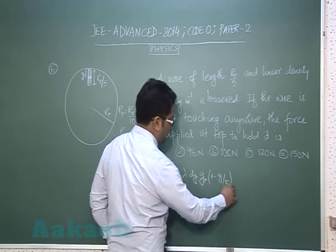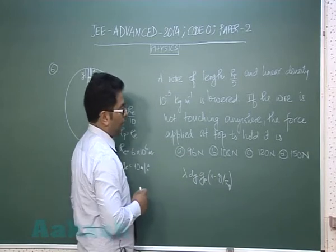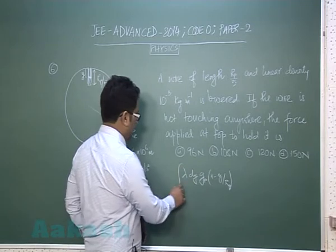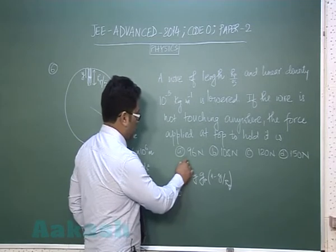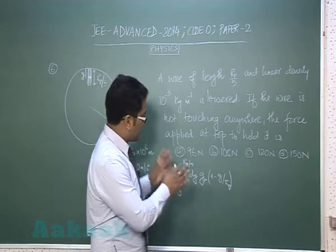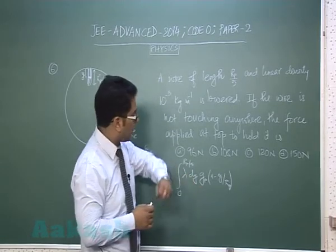Obviously r of planet, and this is the weight of that small element. Integrating from zero to rp by 5 will get the total weight and this is the same force that has to be applied from the top.